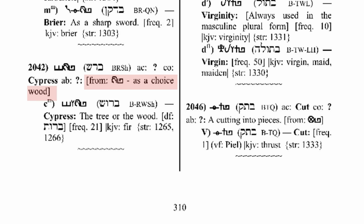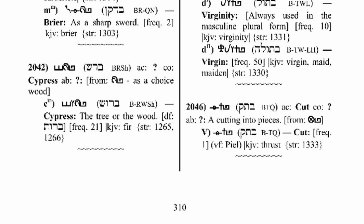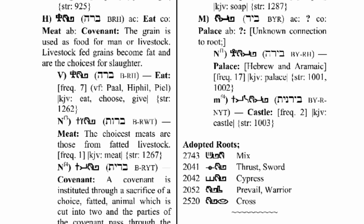If we go back to the end of the roots derived from bar, where we have been studying the words related to a covenant, we will see all of the adopted roots derived from this parent root, and here is 2042, the word for cypress.